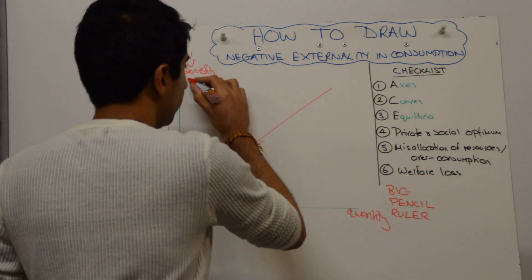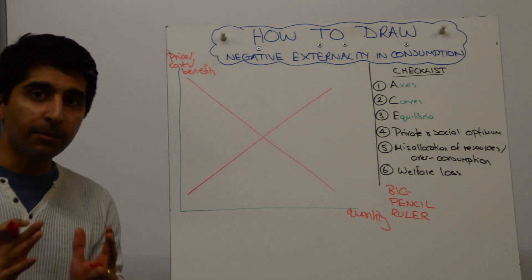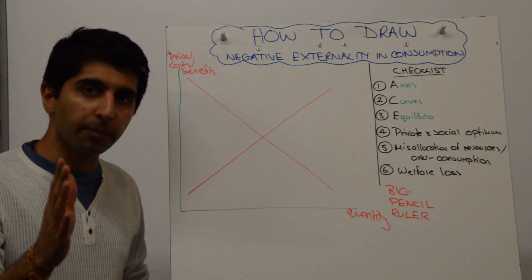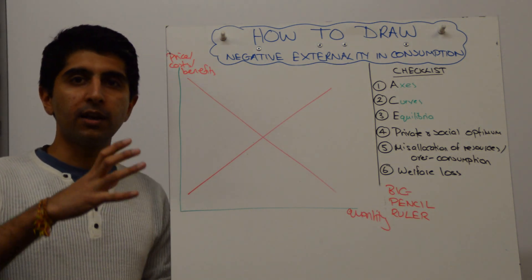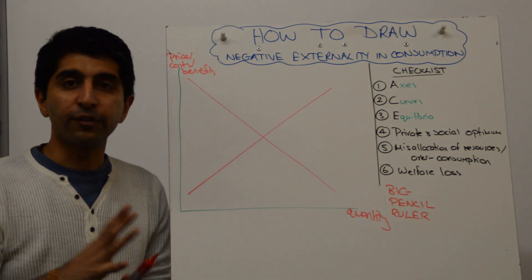We then start with a basic equilibrium like that. And we don't label the curves just yet because in our mind we stop here and we think, right, what are we working with? Because we know there's going to be discrepancy between social and private of something.